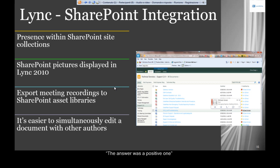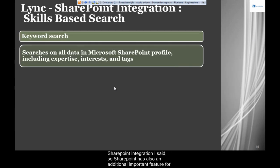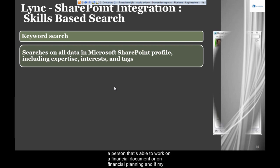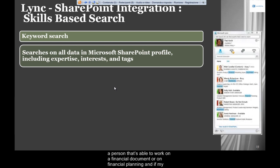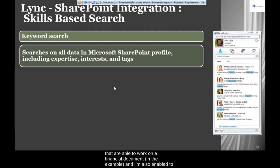SharePoint has an additional important feature for Link — the so-called skills-based research. For example, if I'm searching for a person able to work on a financial document or financial planning, and my company uses SharePoint, I can launch a search from Link and get a list of people able to work on that financial document.